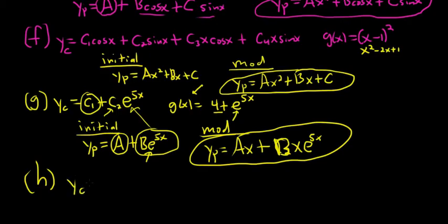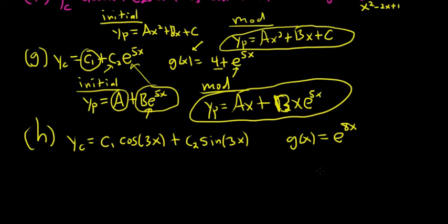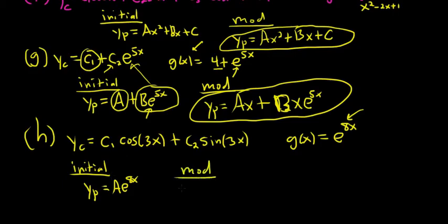Example H. Yc equals C1 cosine 3x plus C2 sine 3x. And g of x in this case is e to the 8x — the right-hand side of our DE. Our initial is based solely on the right-hand side: Yp equals A e to the 8x. Then you look at the terms of Yc — there's no repetition. So our modified is exactly the same: Yp equals A e to the 8x.